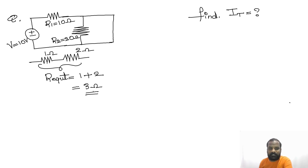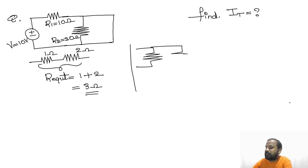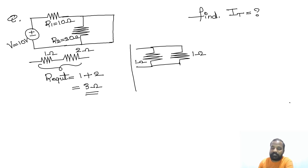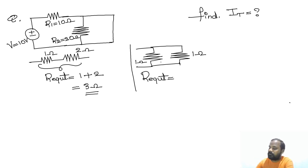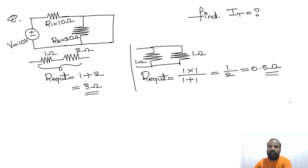For a parallel combination of two resistances, you can use the formula: equivalent resistance equals the product of the two resistances divided by their sum. For example, if both resistances are 1 ohm each connected in parallel, then R_eq = (1×1)/(1+1) = 1/2 = 0.5 ohms.